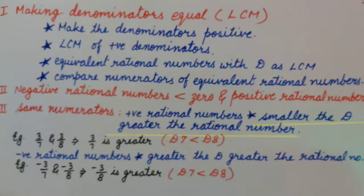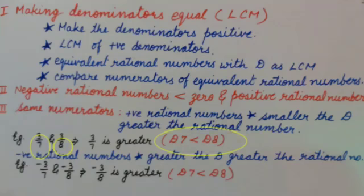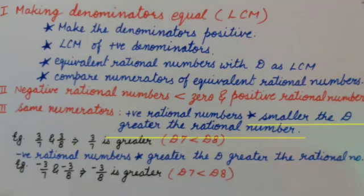For example, comparing 3/7 and 3/8, we can say 3/7 is greater without calculation because denominator 7 is smaller than denominator 8. So, smaller the denominator, greater the rational number.